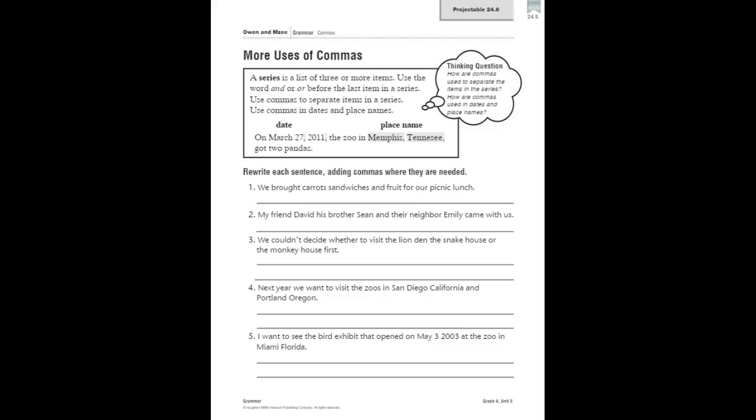So if we look at 'On March 27, 2011, the zoo in Memphis, Tennessee got two pandas,' if I ask the thinking questions: How are commas used to separate items in the series? I use a comma to separate each item in the series. I don't have a series in this example, but I do need to use the second part of the thinking question: How are commas used in dates and place names? We have a comma here used in a date, and we have a comma because we have a city and a state that we need to separate.